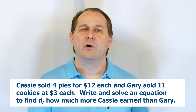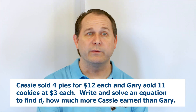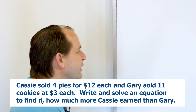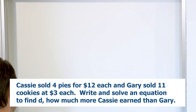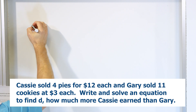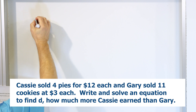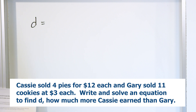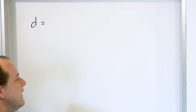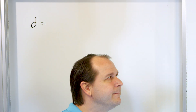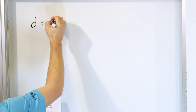The point is we want to write it in an equation form to get practice with equations, because then many years from now, when we take the training wheels off, you're solving problems that no one's ever solved before using these tools called equations. So just because you can look at it and solve it doesn't mean that what we're doing here doesn't have any value. We want to write an equation to solve for D, which is how much more Cassie earned than Gary.